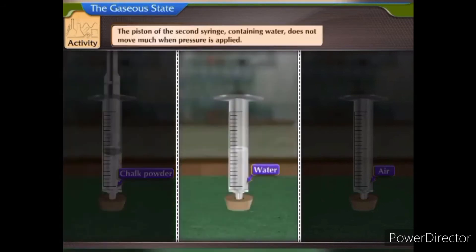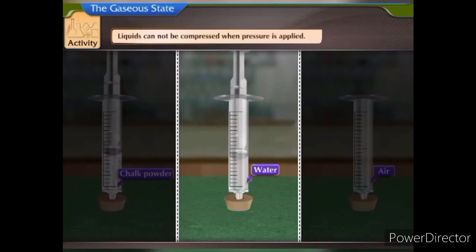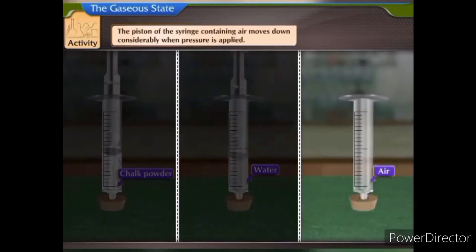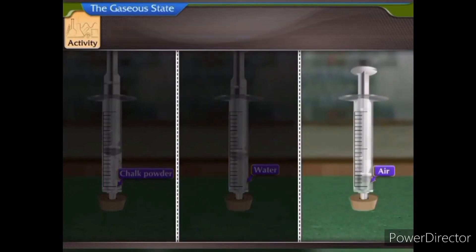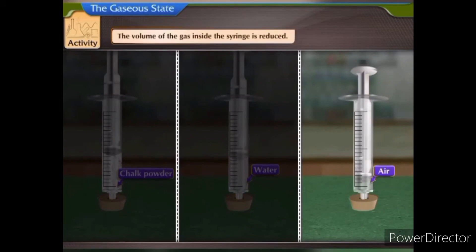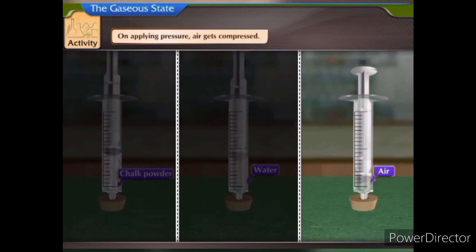The piston of the second syringe containing water also does not move much when pressure is applied. This shows that liquids also cannot be compressed. The piston of the syringe containing air moves down considerably when pressure is applied, indicating that the volume of gas is reduced. Thus, on applying pressure, air gets compressed.